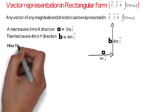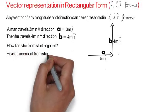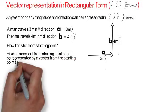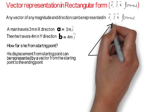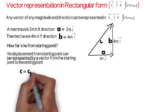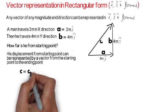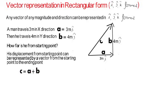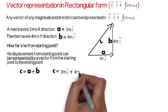The question is: how far is he from the starting point? His displacement from the starting point can be represented by a vector drawn from the starting point to the ending point — that will be the displacement vector. Let us call it vector c. From the triangle law of vector addition, c = a + b. Since a = 3m î and b = 4m ĵ, we get c = 3m î + 4m ĵ.